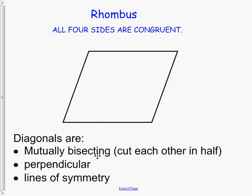The diagonals are mutually bisecting, that means they cut each other in half, and they are perpendicular.